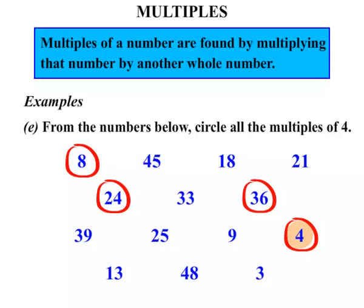Does 4 go into 4? Well yes it does, so we circle that. Does 4 go into 13? No. Does 4 go into 48? Yes it does, 12 times, so it will be a multiple. And finally does 4 go into 3? No way.